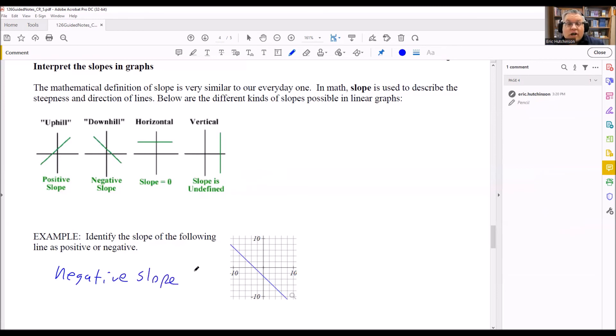And that answers that question. So you just look at the picture, and that's going to tell you whether it's going to be positive, negative, slope of zero, or undefined.